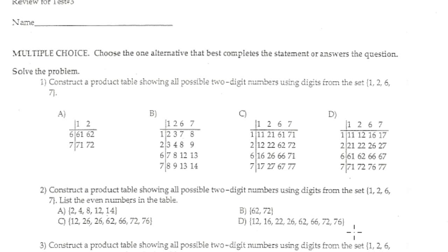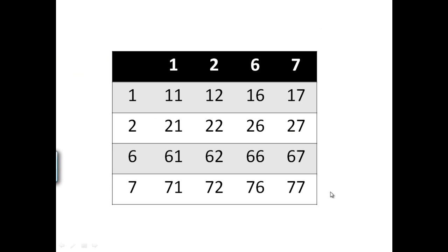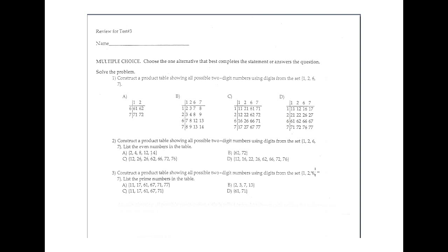Number 1: Control the truth table showing all possible 2-digit numbers using digits from the set {1, 2, 6, 7}. This is the product table — it corresponds with option D. The answer is option D.